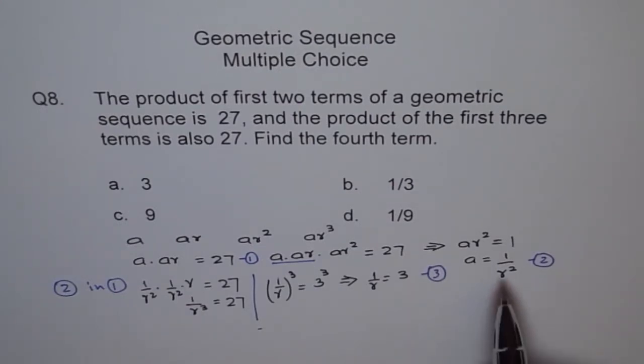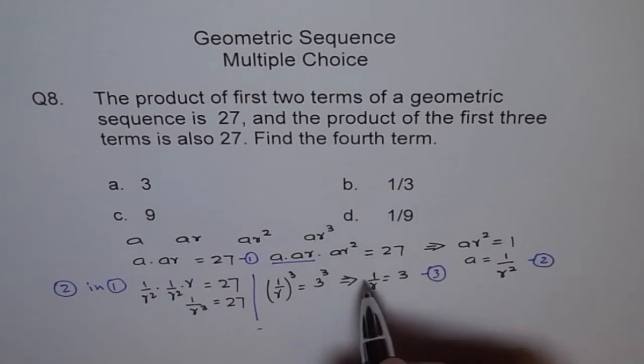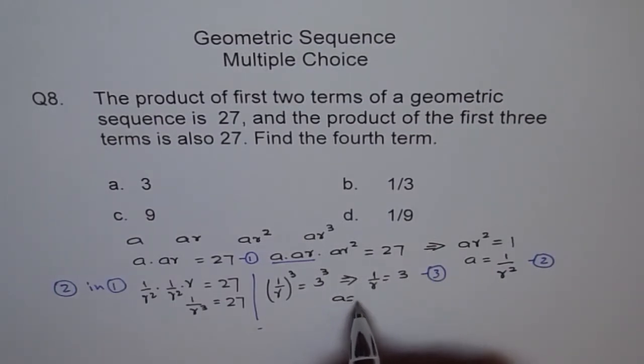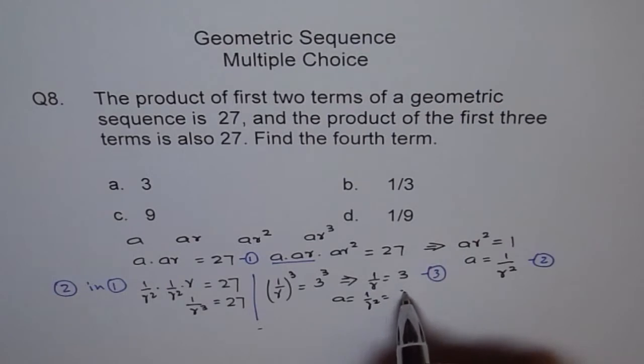If 1 over r is 3, then a should be 1 over r squared, which is 9. So 1 over r is 3. So we get a as 9.